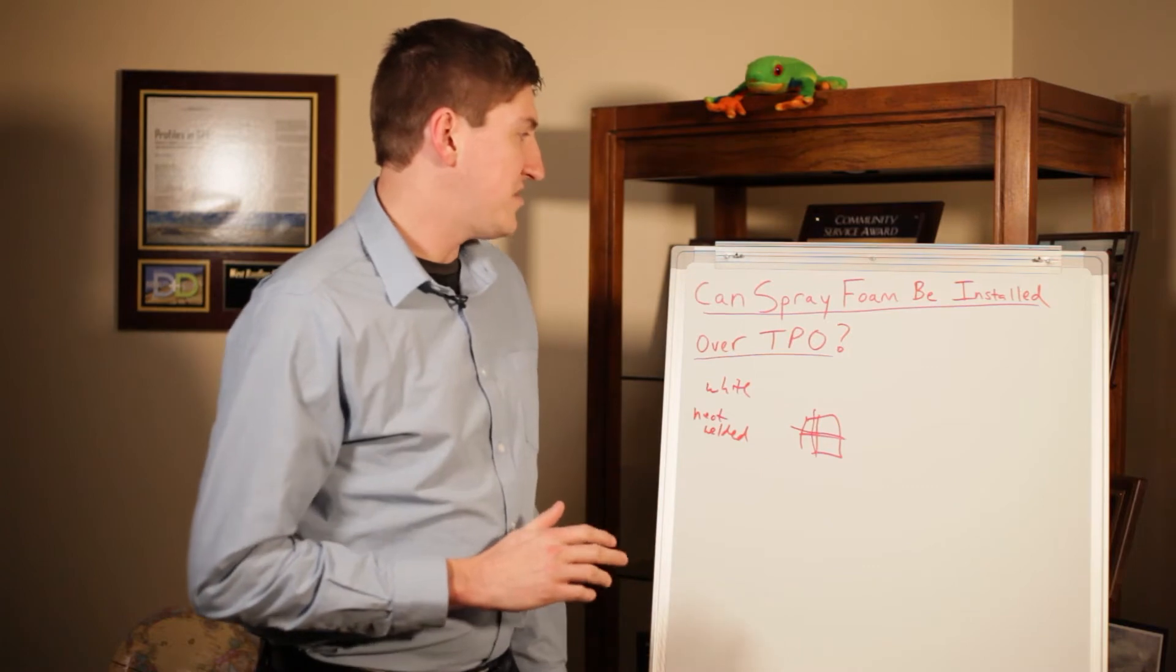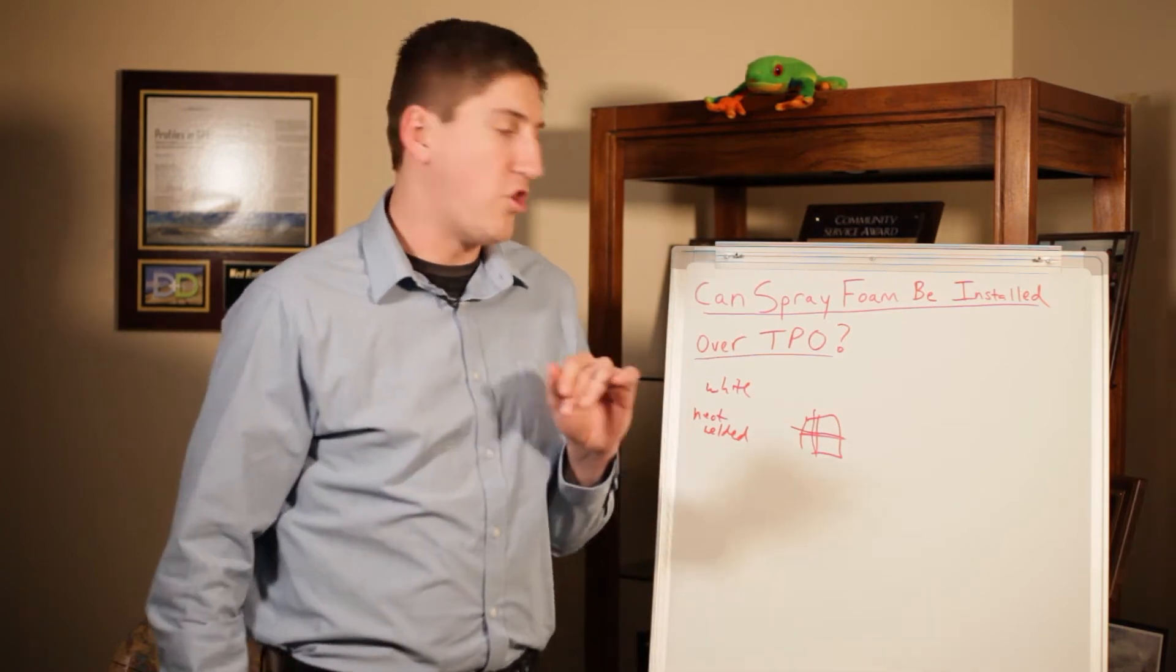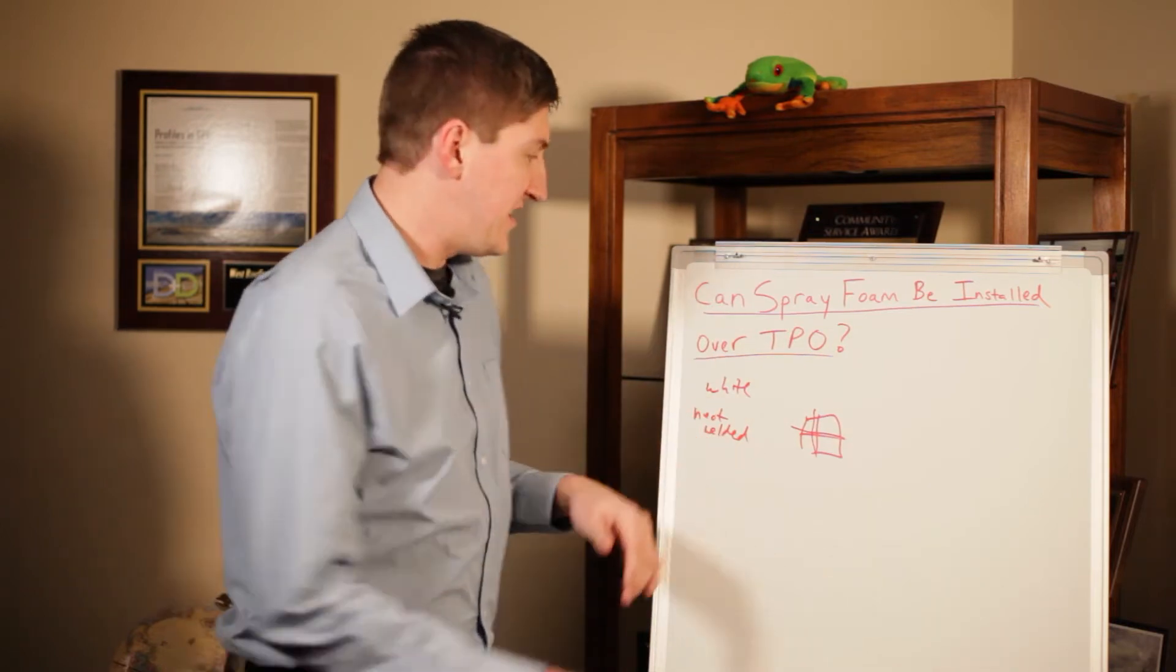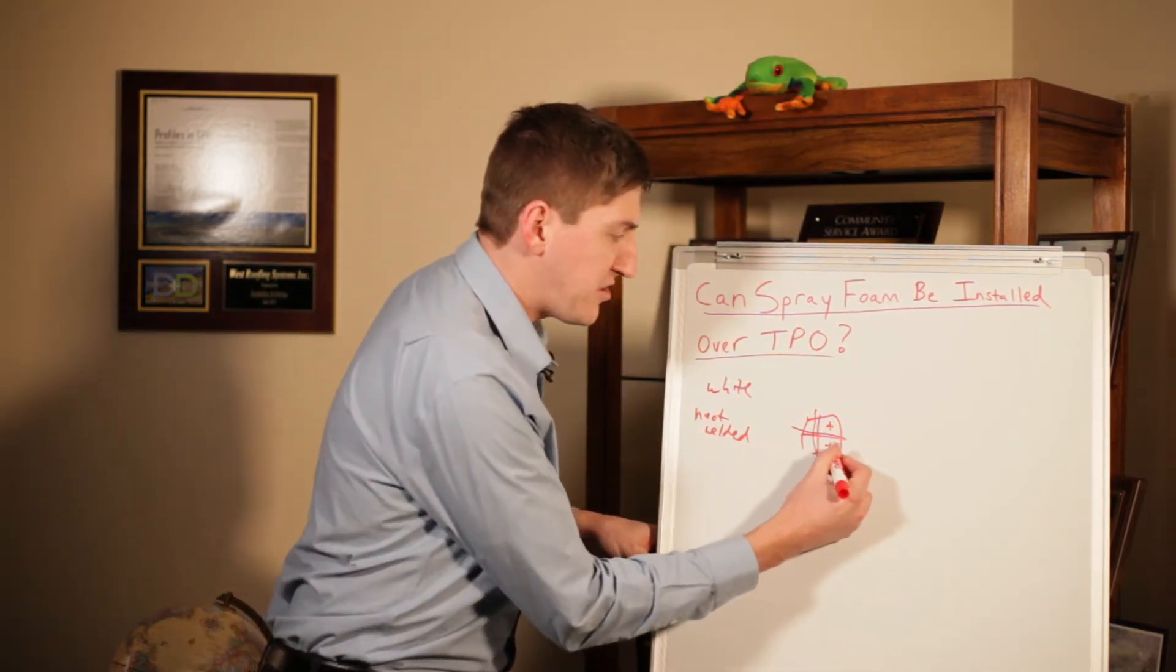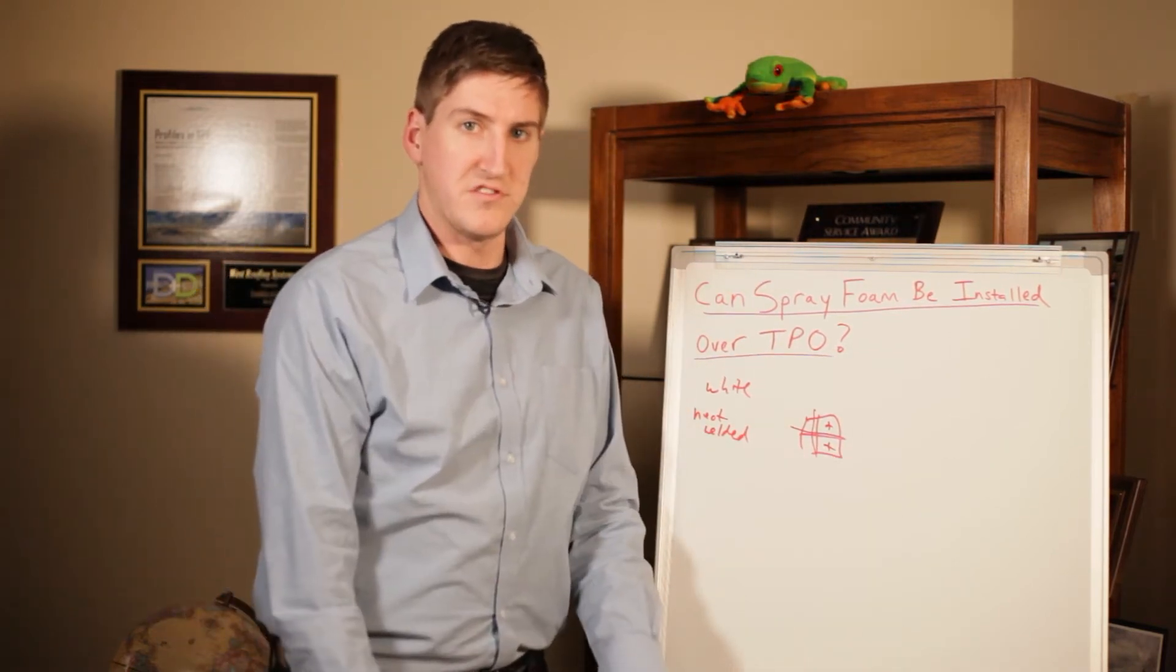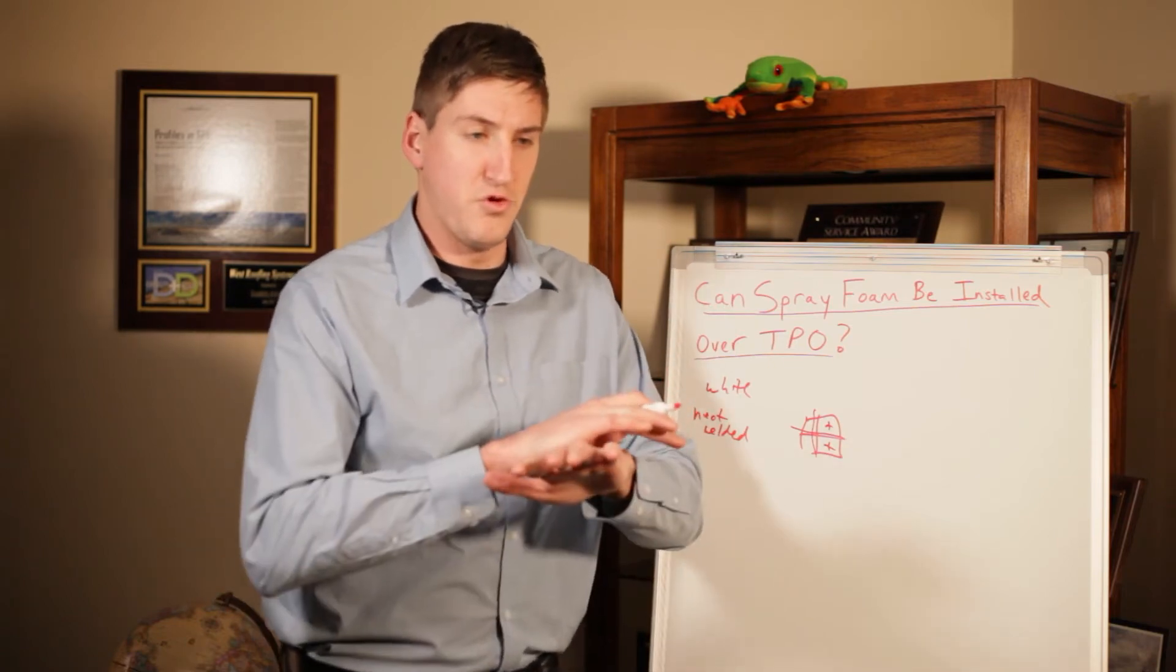So can you install spray foam over top of it? You can and you need to have a cover board over top of the TPO roof. The reason why is in these areas, the extra areas that aren't seamed together, it's not adhered properly so you need something over top to make sure the whole roof is level.